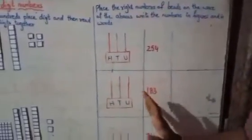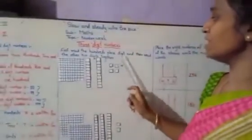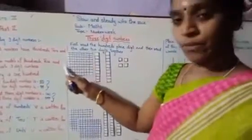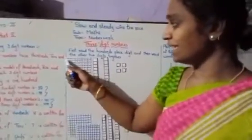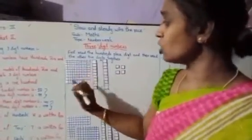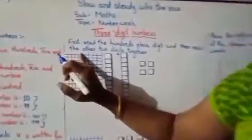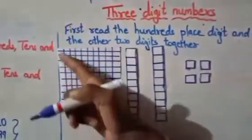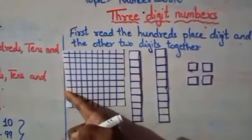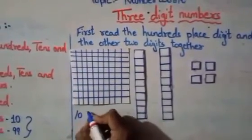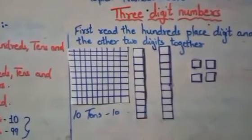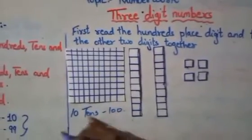To read 3-digit numbers, first read the 100s place digit, then read the other two digits together. Look at these boxes — there is one large square. Inside it, there are 10 rows of 10 small squares, so 10 tens make 100. So 10 tens make 100.